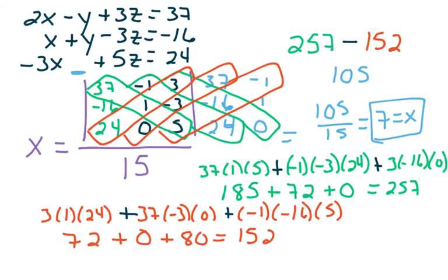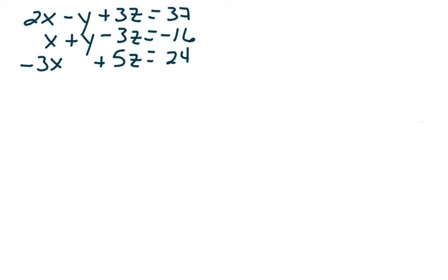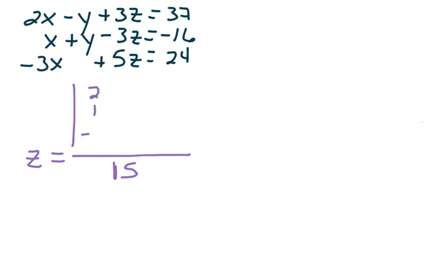So far I have x equals 7 and y equals 4. Now we just have to set up the same type of problem to find the z value. On the bottom we still have the coefficient matrix determinant of 15. On top, we keep the x column the same — 2, 1, negative 3 — keep the y column the same — negative 1, 1, 0 — and now it's the z column that changes, so we put in our constants: 37, negative 16, and 24.